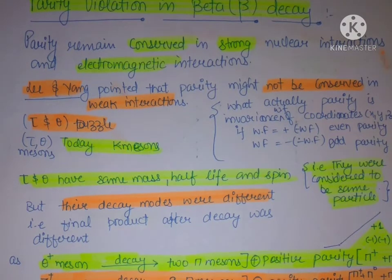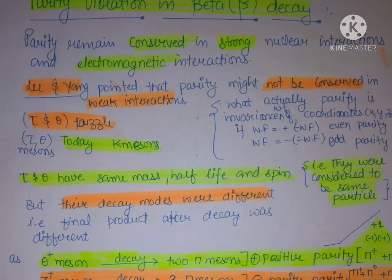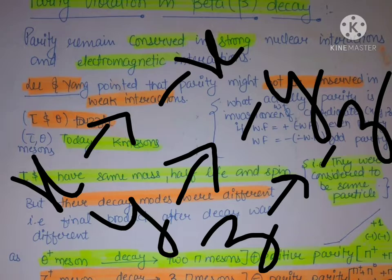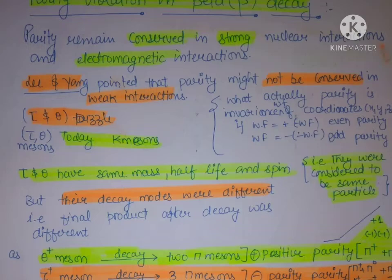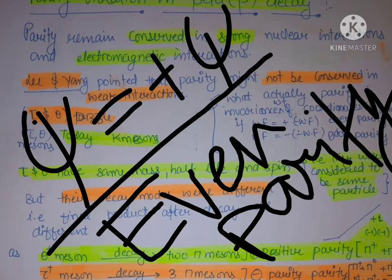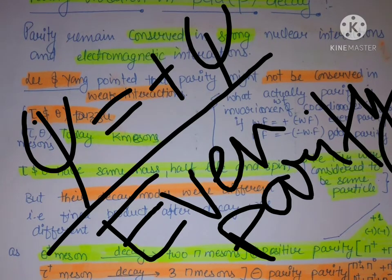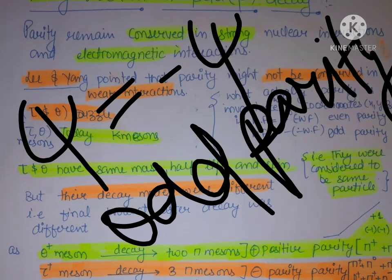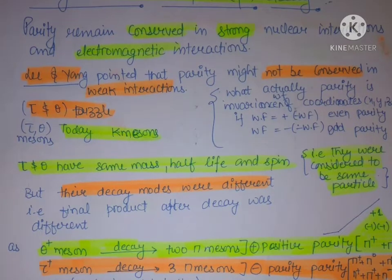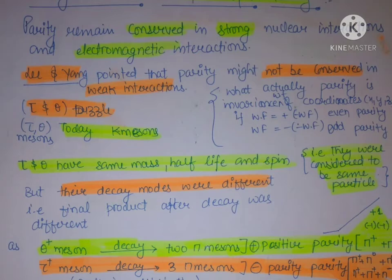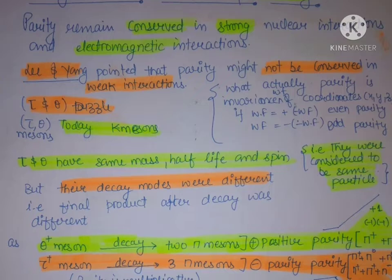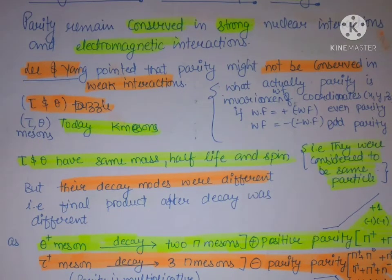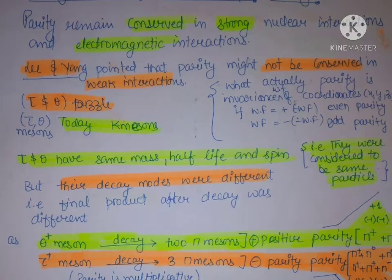First, we know that parity is defined as follows: if we replace x with minus x, y with minus y, and z with minus z, and the wave function remains the same, then parity is even. If the wave function changes sign, then parity is odd. Just as we have studied even functions like cos x and odd functions like sin x, parity is even if the wave function is positive under inversion and odd if it changes sign.